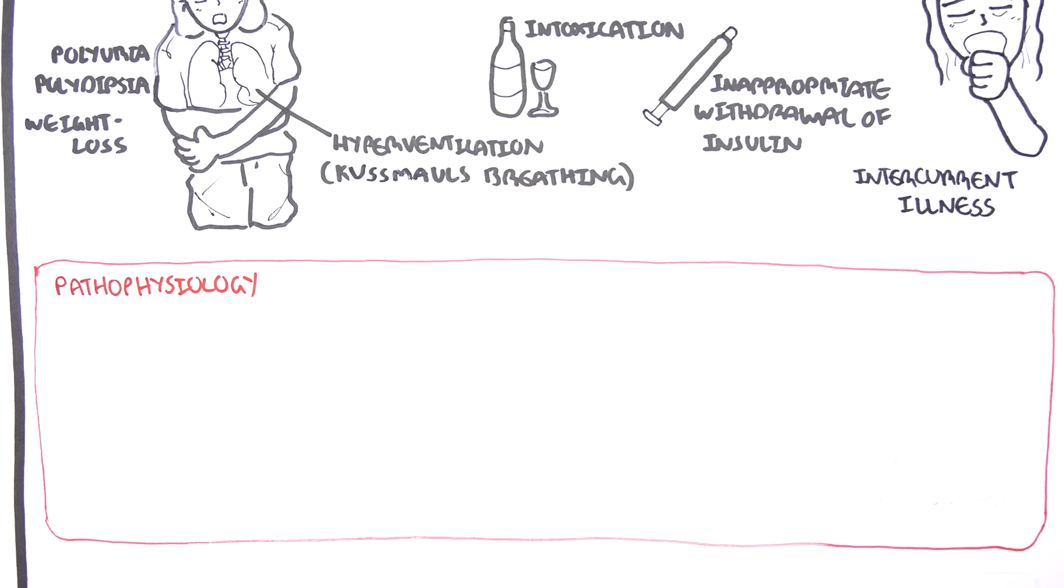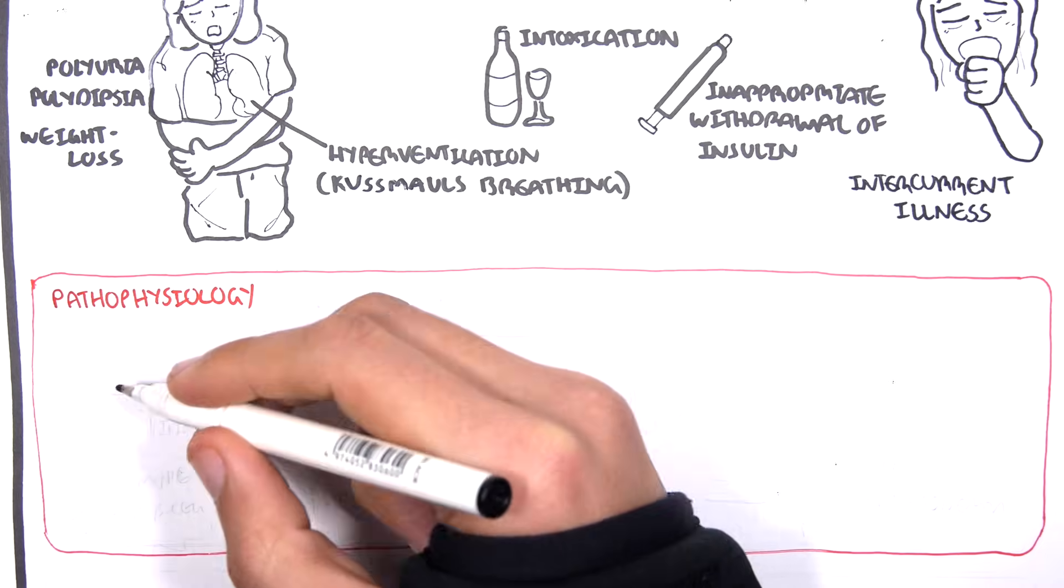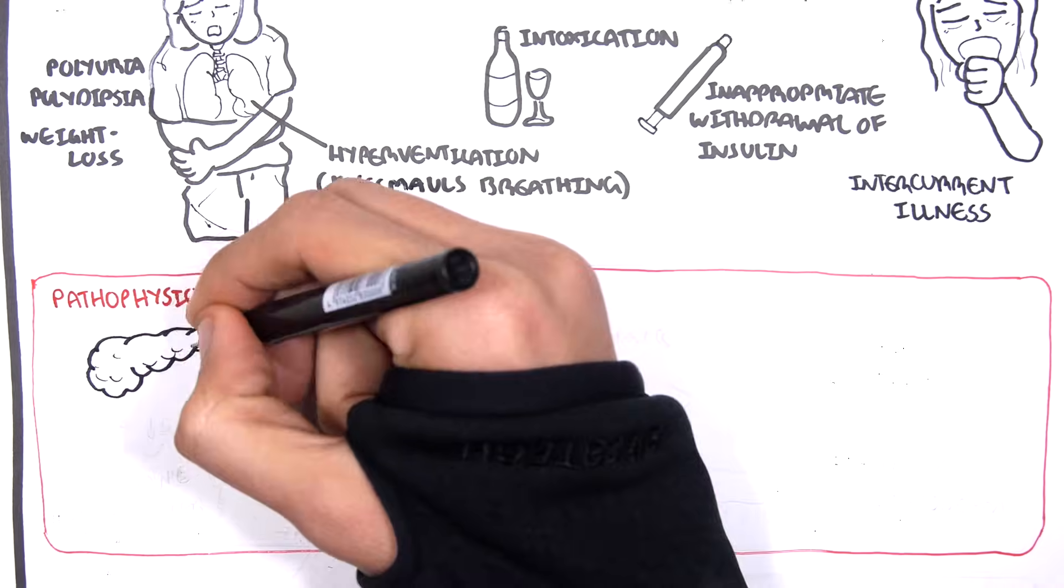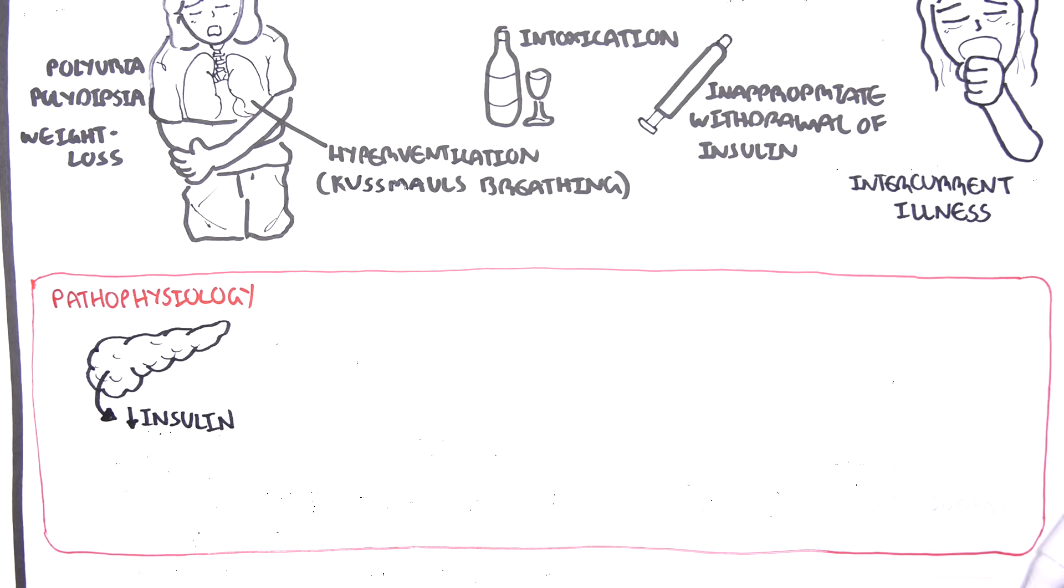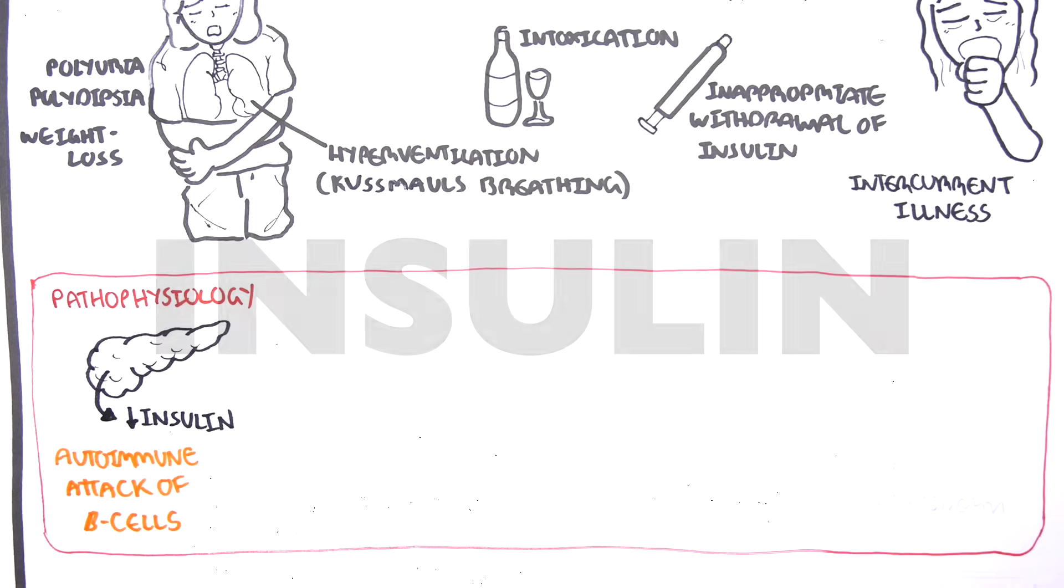Anyways, the pancreas normally produces insulin. However, in diabetes type 1, there is an autoimmune attack on the beta cells, which normally produce insulin. And therefore, insulin is not being produced anymore.